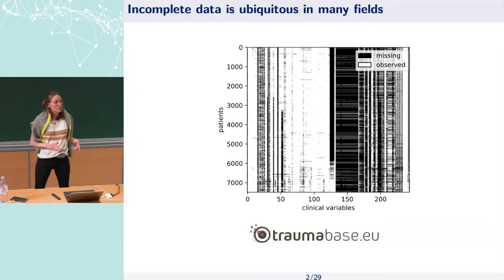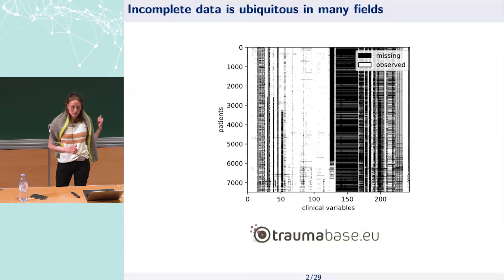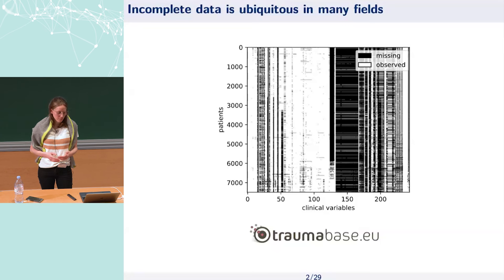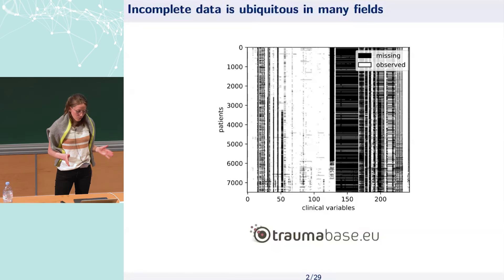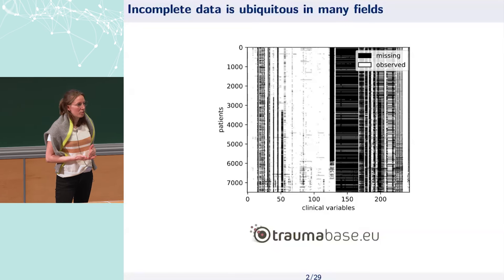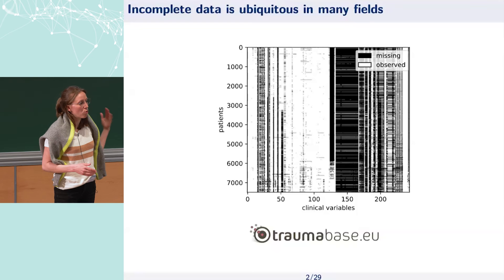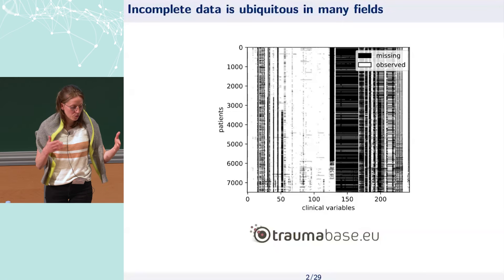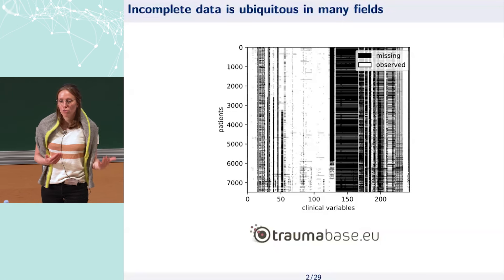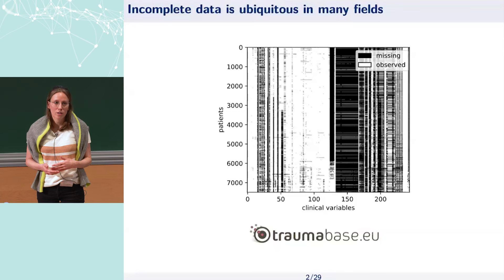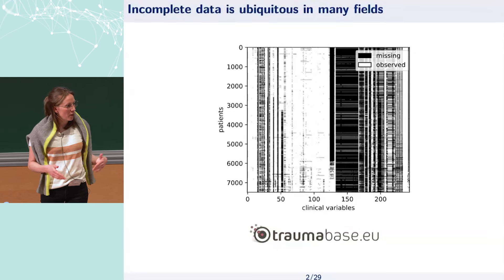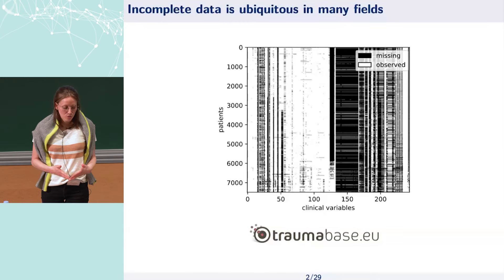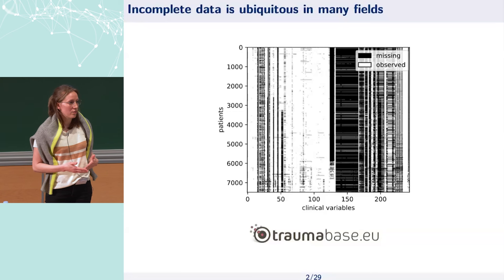What motivates this work is typically this kind of data — it's a clinical database, and here every black entry is a missing entry, there's no value in there. You see that for almost every clinical variable we have at least one missing value, and almost every patient has at least one missing value. So if someone asks you to train a prediction model, let's say for hemorrhagic shock, you have to do something with missing values first because most models do not handle missing values natively.